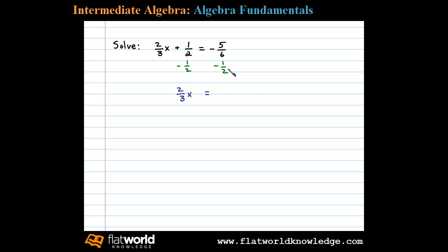The common denominator in this case is 6. We'll multiply numerator and denominator here by 3, and that leaves us with negative 5 minus 3, or negative 8/6. Now at this point we see a coefficient of 2/3.